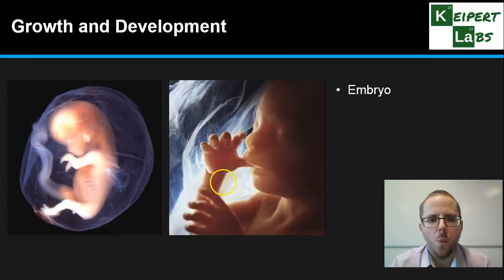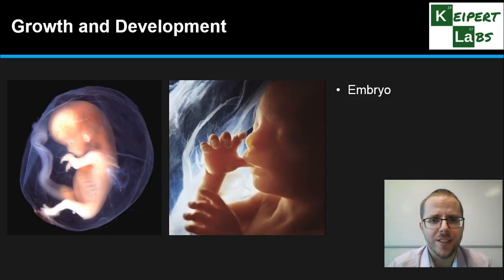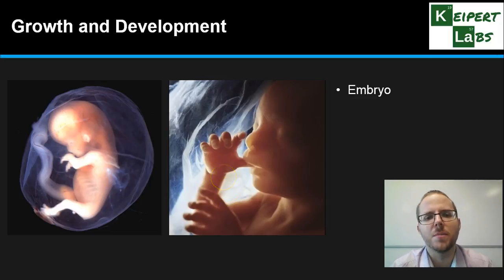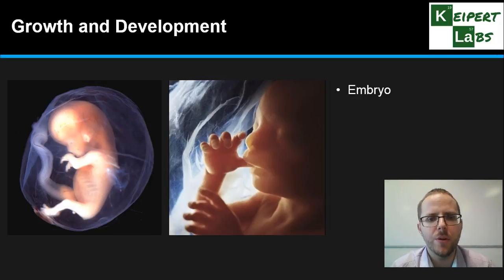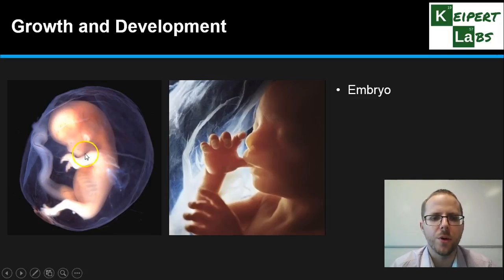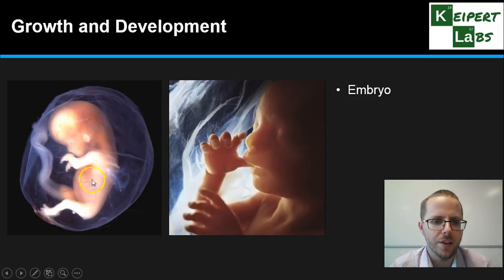Now all the different systems begin growing and developing. We're starting out very small, but in a very short space of time, that blastocyst develops into an embryo — the term used for the first eight-week period. You can start to see physical features forming: arms and legs, ears, eyes, the shape of the head, the spine, the rib cage. You can see all of those starting to develop in the image.